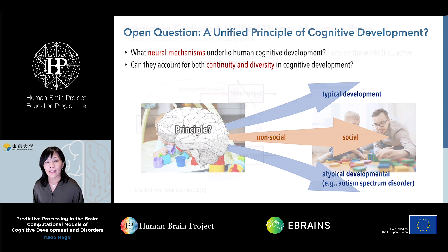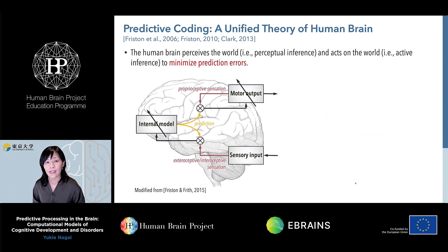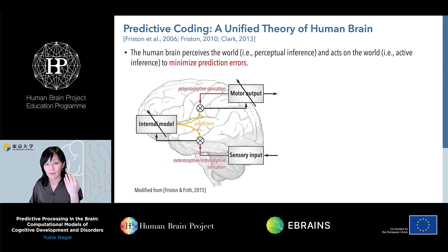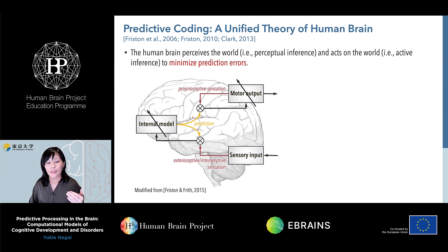In recent decades, we have been focusing on the neuroscience theory called predictive coding, which was originally proposed by neuroscientists as a unified theory of the human brain. The basic idea of predictive processing is that the human brain works as a predictive machine. It does not just perceive and recognize the world using only bottom-up incoming sensory signals; rather, the brain's internal model makes predictions about sensory signals, and the brain integrates this top-down prediction and bottom-up sensory signals in order to perceive the world and act on the environment.